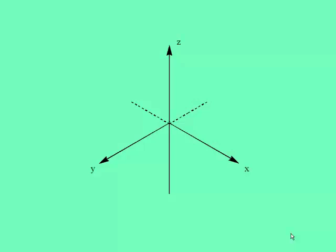In crystal field theory, it is convenient to place the metal cation at the meeting point of an imaginary X, Y, and Z axis. The X, Y, and Z axes are shown here such that the Z axis is on the plane of the computer screen. The X and Y axes are coming out from behind the screen. The three axes are all perpendicular to each other, and the metal cation is placed at the point where all three axes intersect.